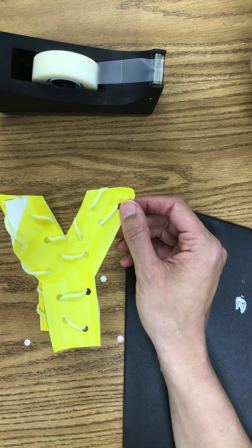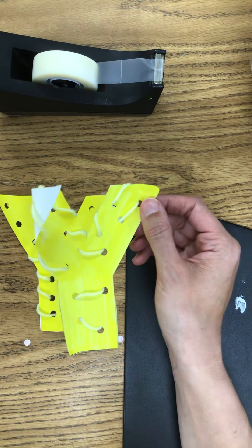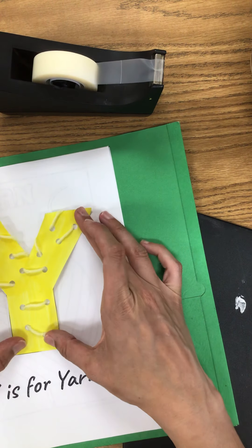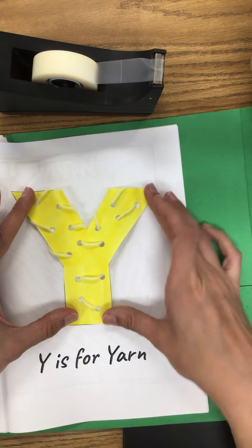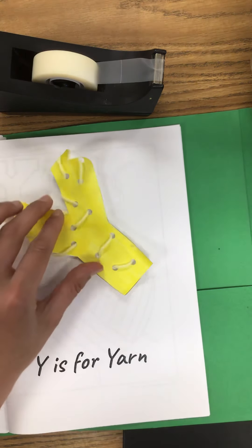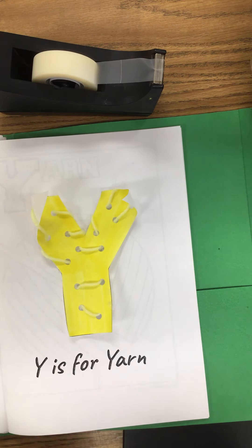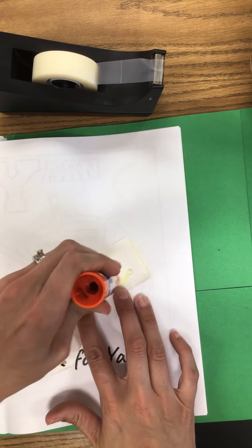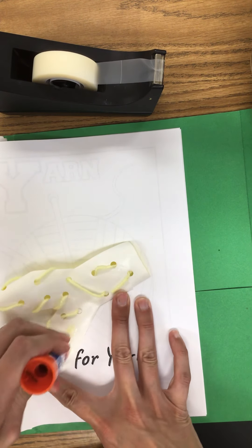Then if you have your art book, you can go ahead and glue it to your Y is for yarn page. And then if you want to decorate around this, draw a little yarn ball or a little cat playing with the yarn. That's always fun to do as well. But that is pretty much it.